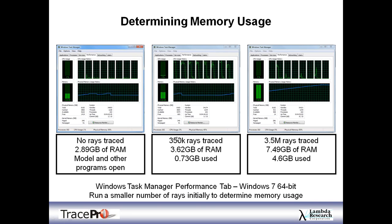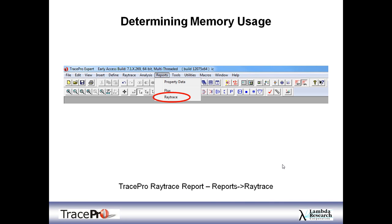I traced 350,000 rays and my RAM went up to 3.62 GB, meaning I used about 0.73 GB — three-quarters of a gig — for that ray trace. I then traced 3.5 million rays — 10 times as many — and now I'm up to 7.5 GB. With only 8 GB on my computer, this is about the limit for staying in analysis mode, with memory usage by the ray trace up to about 4.6 GB. One approach: run a ray trace with a smaller number of rays, look at the results, then extrapolate out to your larger number of rays.